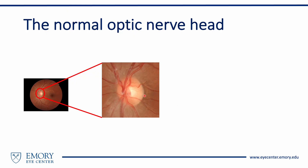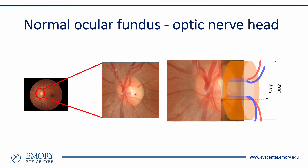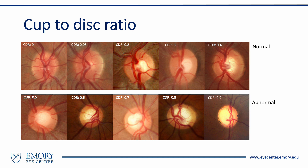The normal optic disc is vertically oval, has a reddish-pinkish hue, has clear sharp margins, and is approximately 1.5 to 2 millimeters in diameter. The small depression in the center of the disc is called the cup. The cup-to-disc ratio is defined as the ratio of the vertical diameter of the cup to that of the disc. In this example, the ratio is about 0.3. In normal adults, this ratio should be less than 0.5. The cup-to-disc ratio can vary considerably in the normal population.